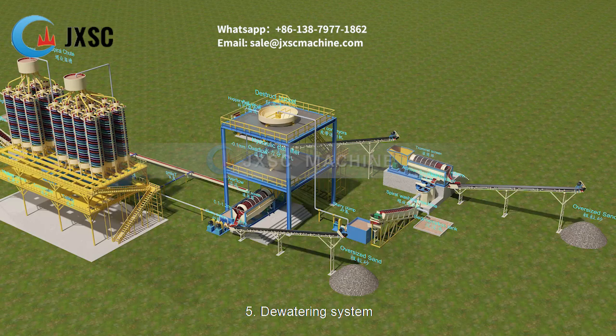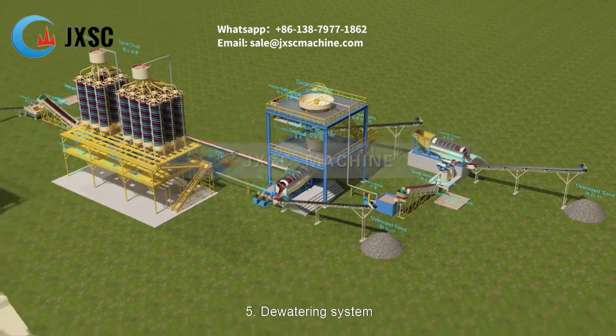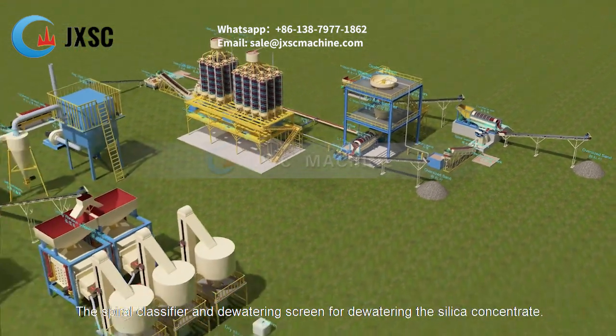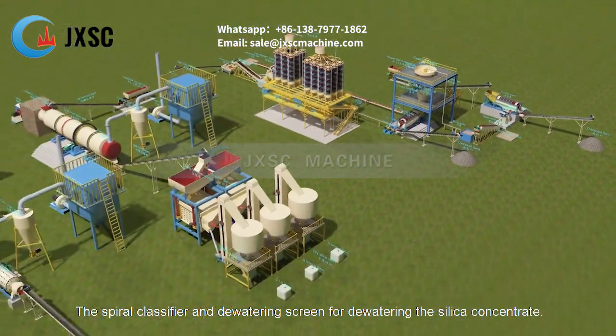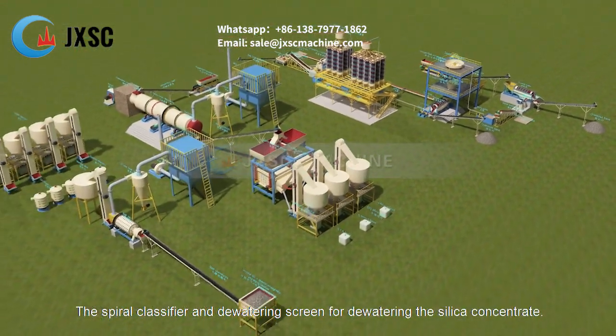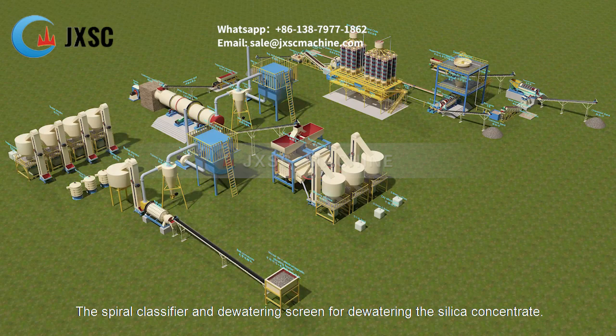5. Dewatering system. The spiral classifier and dewatering screen are used for dewatering the silica concentrate.